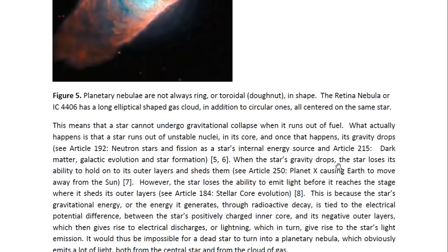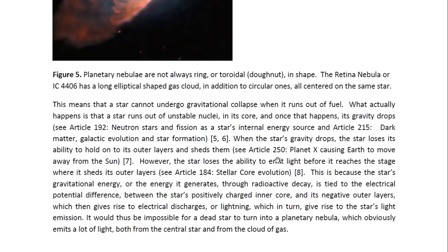So when the star's gravity drops, the star loses its ability to hold on to its outer layers and sheds them. And you may look at article 250 entitled Planet X Causing Earth to move away from the sun for more details on that. However, the star loses the ability to emit light before it reaches the stage where it sheds its outer layers. And you may look at article 184 entitled Stellar Core Evolution for more details on that.